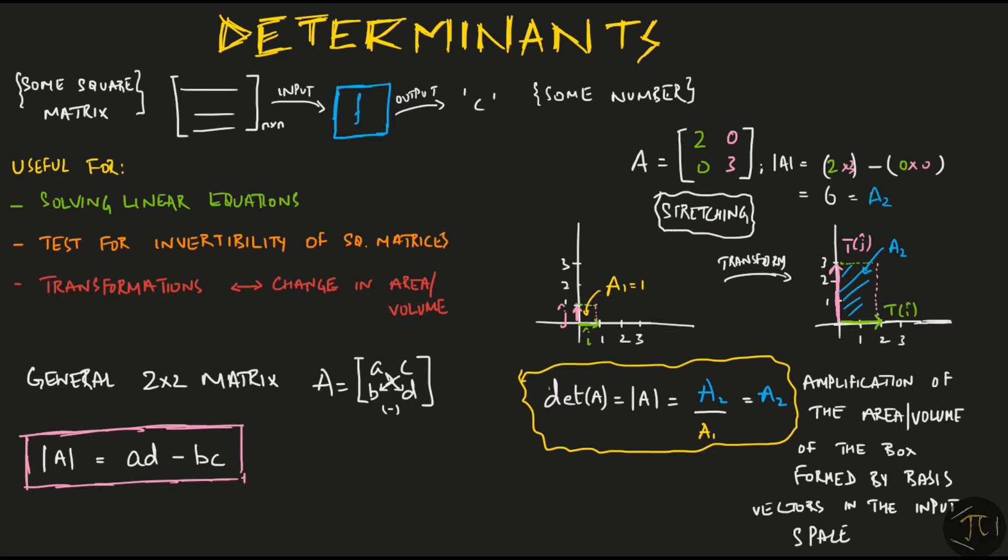For the 3D space, we look at the volume of the cube formed by the standard basis vectors i-hat, j-hat and k-hat. After the transformation, you would get something like a box and if you calculate its volume, it would equal the determinant of the matrix. Same goes for n-dimensional space as well. Of course, you cannot think about n-dimensional boxes geometrically but you get the idea.